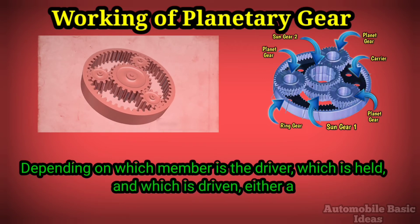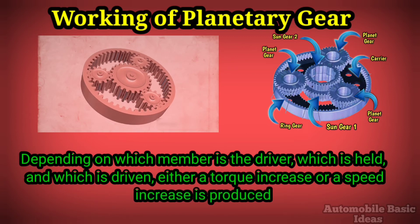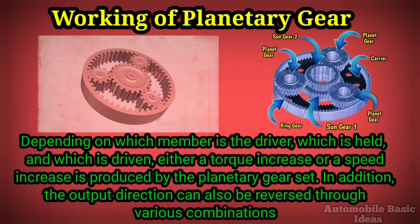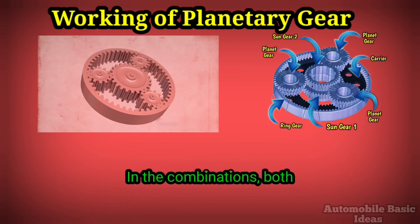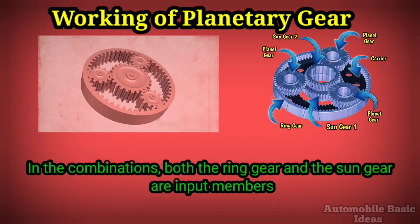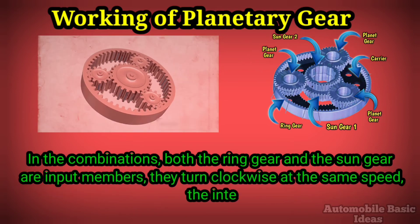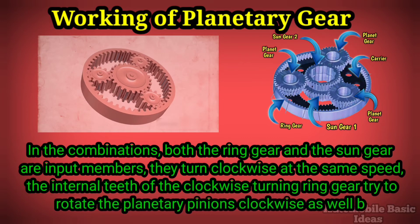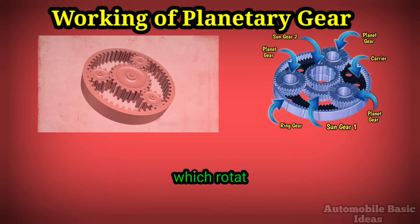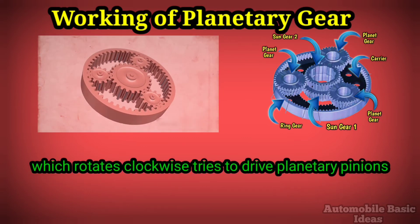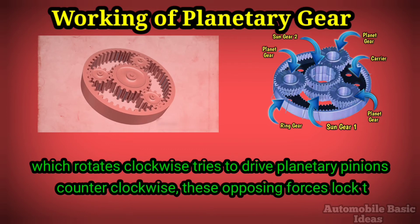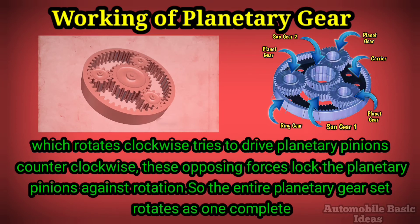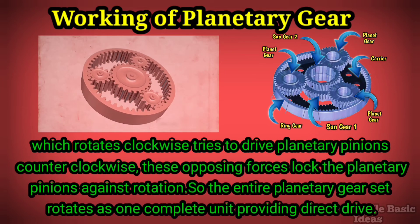The third member becomes the output member. Depending on which member is the driver, which is held, and which is driven, either a torque increase or a speed increase is produced by the planetary gear set. The output direction can also be reversed through various combinations. In some combinations, both the ring gear and the sun gear are inputs. The sun gear, rotating clockwise, tries to drive the planetary pinions counterclockwise — these opposing forces lock the planetary pinions against rotation, so the entire planetary gear set rotates as one complete unit, providing direct drive.